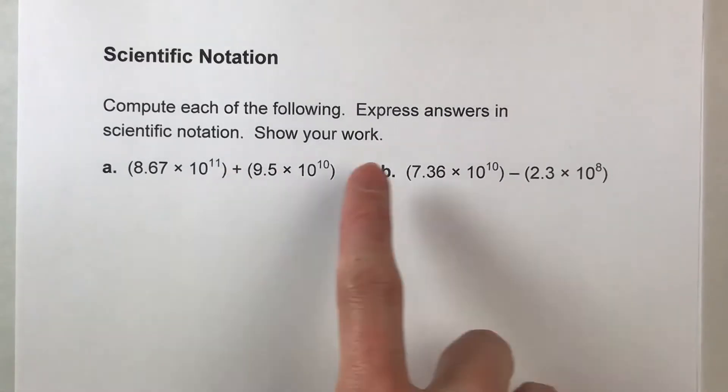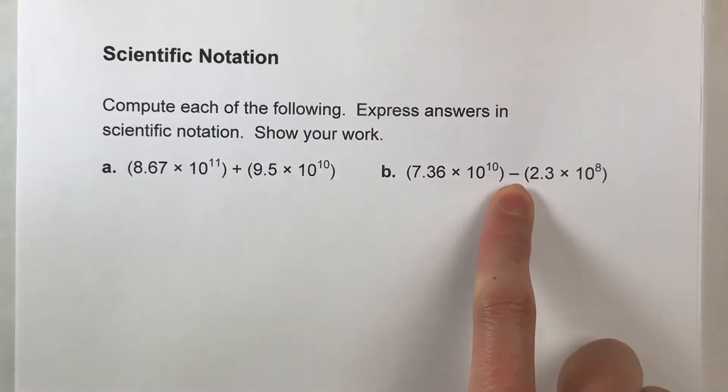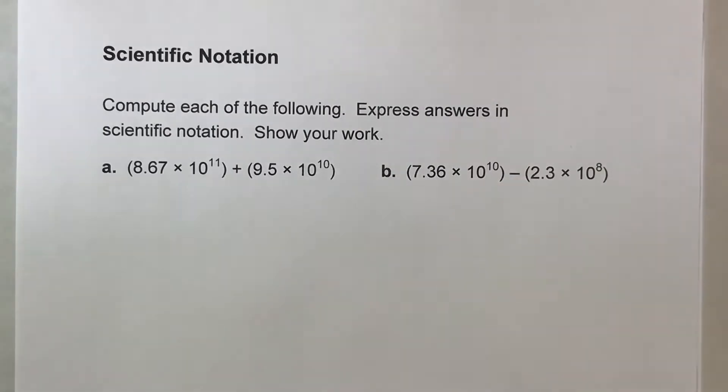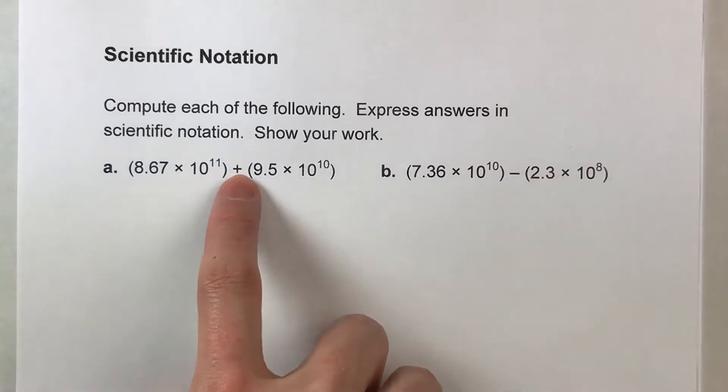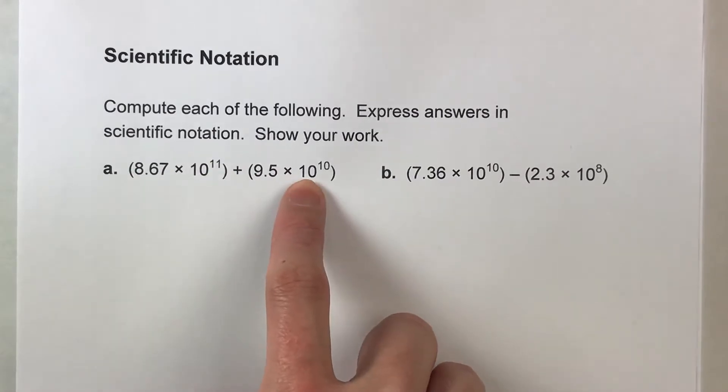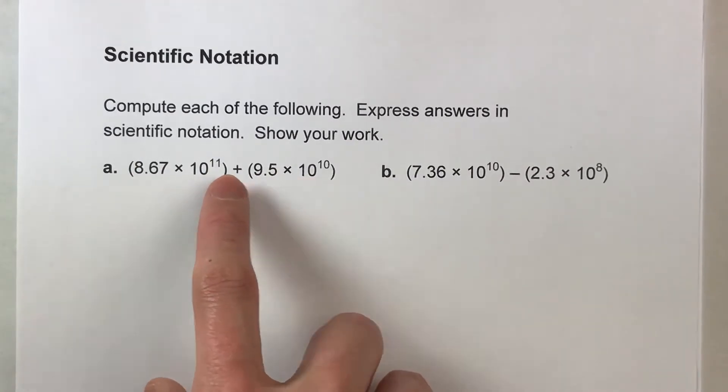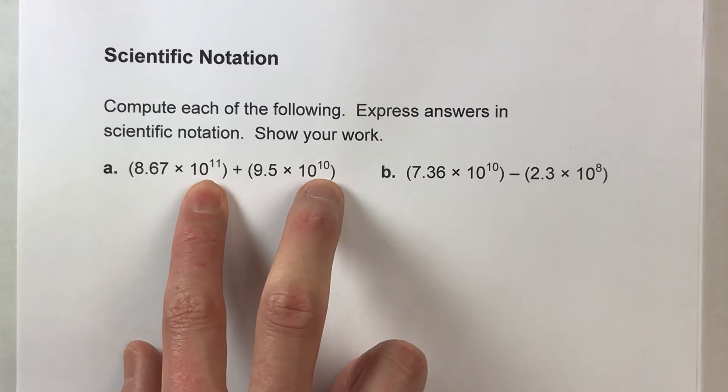And it turns out adding and subtracting numbers in scientific notation is harder than doing multiplication and division. And the reason why is because when we're going to be adding two numbers in scientific notation, we can't add these unless they have the same powers of 10.